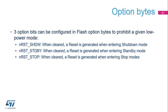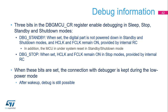Three bits are available in the flash option bytes to prohibit a given low-power mode; when cleared, a reset is generated instead of entering the related low-power modes. The microcontroller integrates special means allowing the user to debug software in low-power modes. Three bits are available in the debug control register to allow debugging in stop, standby, and shutdown modes. When the related bit is set, the regulator is kept on in standby and shutdown modes, and the HCLK and FCLK clocks remain on to keep the debugger active. Remember to clear these bits when the MCU is not under debug, because the consumption is higher in all low-power modes when these bits are set.